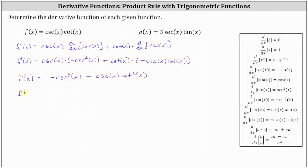Let's factor out negative cosecant x, which gives us negative cosecant x times the quantity cosecant squared x. And because we're factoring out negative cosecant x, we have plus cotangent squared x.